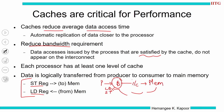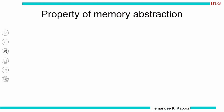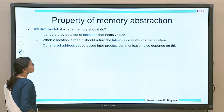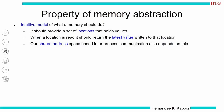We have discussed why caches are critical to performance. Now we will understand the property of the memory abstraction. The intuitive model of memory is a storage device — a set of locations in which we store information. When we store data, the memory model guarantees that we can read the latest value of the written data. If we have written x equal to 5 and there is no other change, then reading x should return 5.